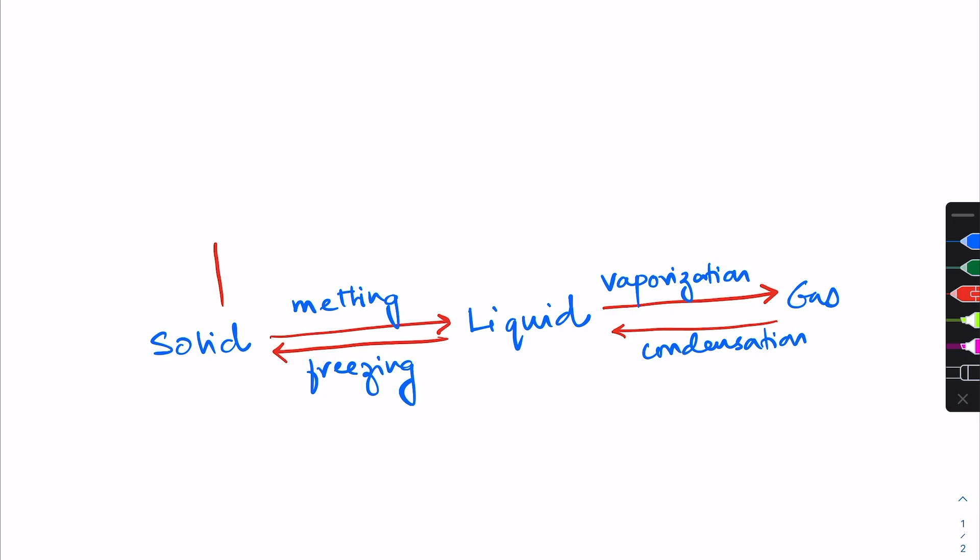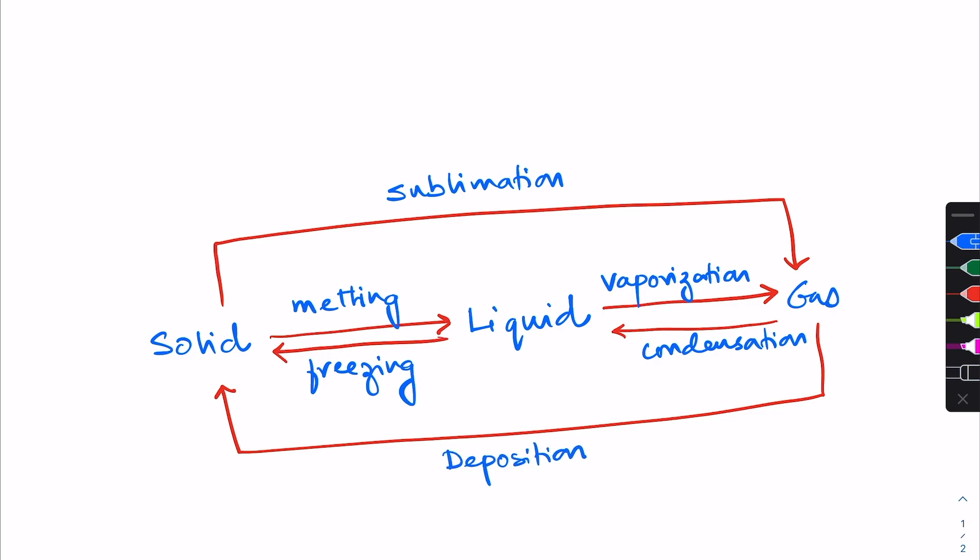Finally, when a solid changes directly to a gas, that process is known as sublimation. And when a gas changes back to a solid directly, that process is known as deposition. I hope this all made sense to you.